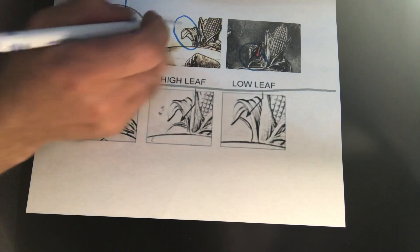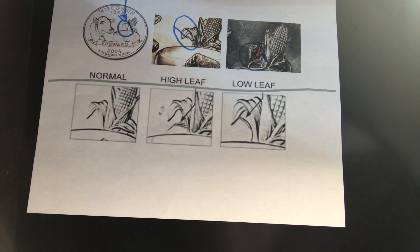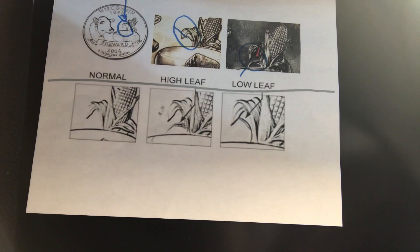High-level leaves basically just kind of point up. And the low-level leaves, they just kind of point down.